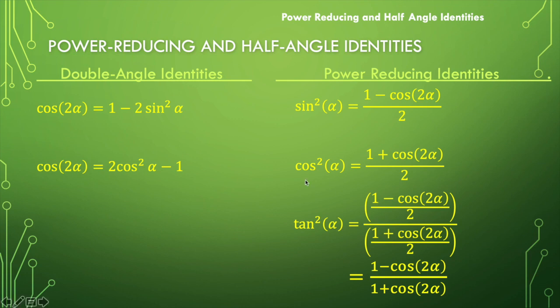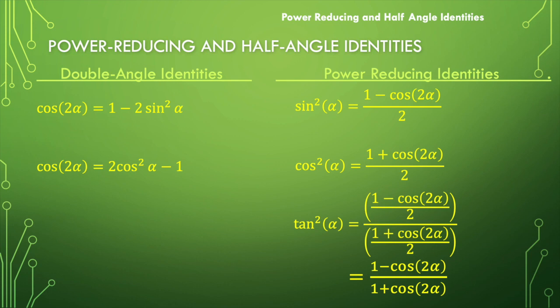These identities are helpful and useful when we want to take a trig function that's raised to a power and express it as a trig function that's not raised to a power. You can see cosine squared here, but the cosine in the resulting expression is not raised to a power — we may have a coefficient but no power on the function. The function is going to be taken down a notch.